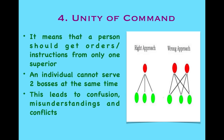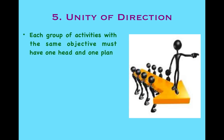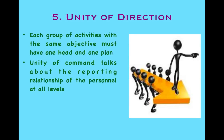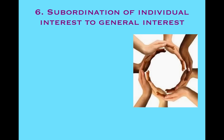The fifth principle is Unity of Direction. Each group of activities with the same objective must have one head and one plan. Unity of Command talks about the reporting relationship of personnel at all levels, whereas Unity of Direction talks about the functioning of the organization in terms of grouping of activities. One head and one plan is the essence of Unity of Direction.